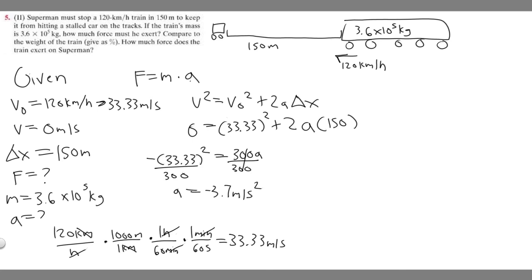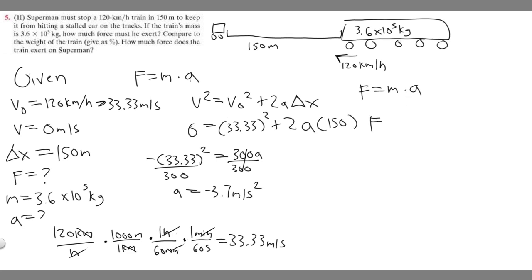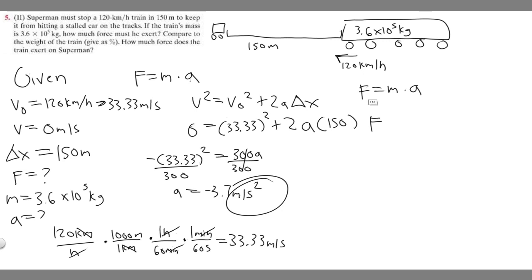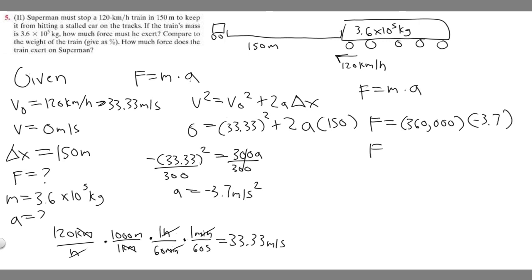Now we have our acceleration and our mass, so we use force equals mass times acceleration. Make sure units align — mass must be in kg and acceleration in meters per second squared. Our mass is 3.6 times 10 to the fifth, which is 360,000 kg. Multiplying 360,000 times negative 3.7 gives us our force.